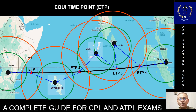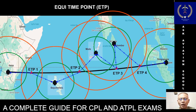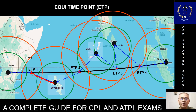These alternates are within the distance between the threshold time and the maximum diversion distance. On the ground during planning, we need to compute the point on route from where it takes an equal amount of time to return to the departure aerodrome or to proceed to the chosen alternate airport. This point of equal time between two sets of airports — in this case the departure airport and the first diversion alternate — is called the Equi-Time Point, or ETP-1.